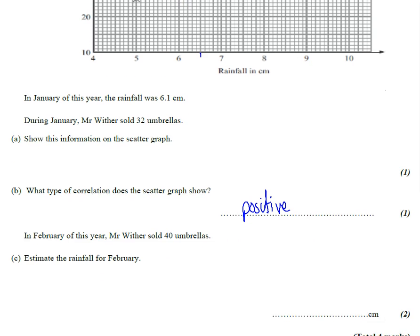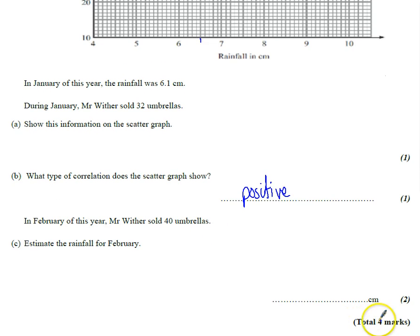And the last part, to make our total of four marks, it says in February this year Mr. Withers sold 40, estimate the rainfall. The best way to do this is to first draw a line of best fit.